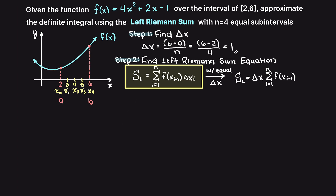Now, let's iterate through our summation notation from i equals 1 to i equals 4. So as we go I will add the appropriate areas to our graph so that you can visualize it as we go. We begin with our constant delta x, which we said can be factored out. Then we will add a bracket and begin our summation at i equals 1. We have our function evaluated at x sub i minus 1, which is x0.